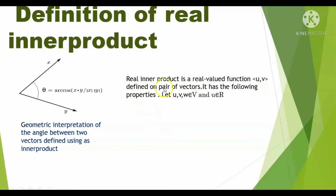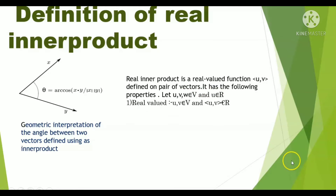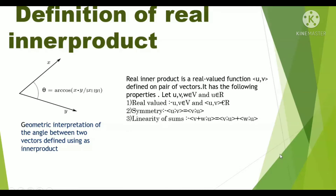A real inner product is a real-valued function defined on pairs of vectors with the following properties. Let u, v, w belong to the vector space V and a belong to R. Property one: real-valued — inner product of u comma v belongs to R. Property two: symmetry — inner product of u, v equals inner product of v, u. Property three: linearity of sum — inner product of (v + w), u equals inner product of v, u plus inner product of w, u.